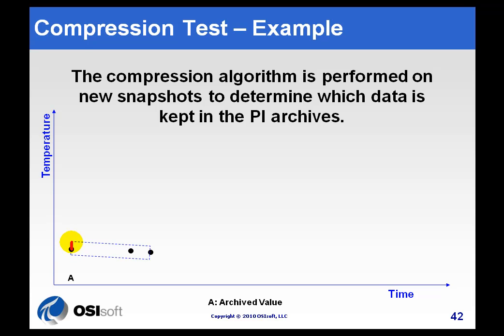So we'll take that last Archived Value, plus and minus that Compression Deviation. We'll take the Current Value, plus or minus the Compression Deviation, and we draw that dead band, or this Parallelogram. Now, as values come in, we're going to extend that Parallelogram.